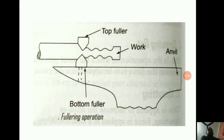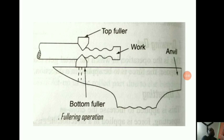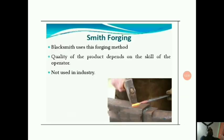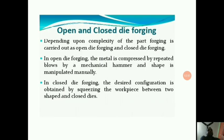The force for shaping is applied by manual hammering or forging hammers used in industrial and workshop purposes. Smith forging involves a lot of skill on the part of the operator and is more time-consuming, but since no special dies are used, it is more beneficial for the manufacture of small parts or in trial production because the heavy cost of forced impression dies cannot be justified in these cases.